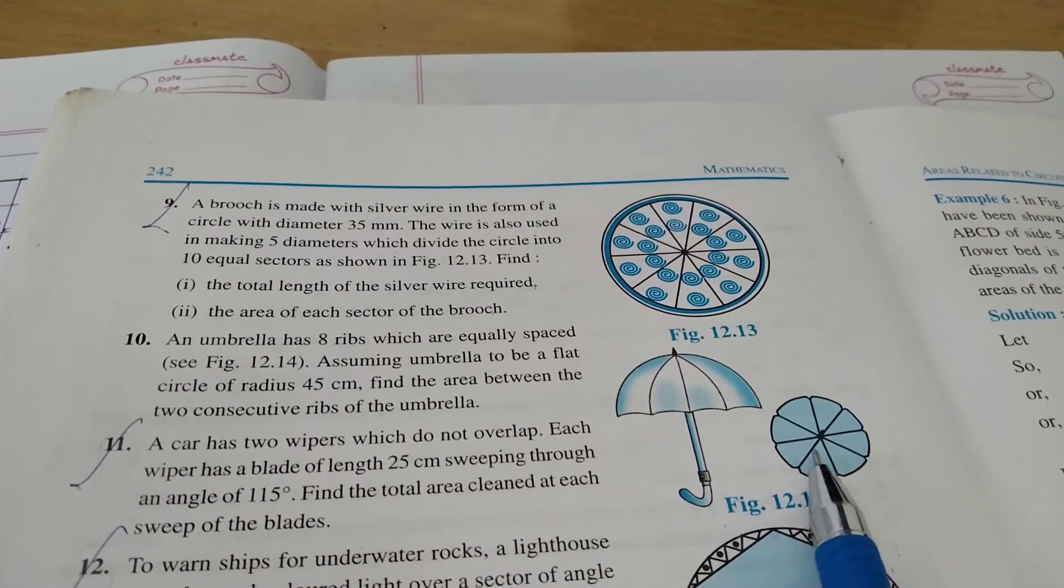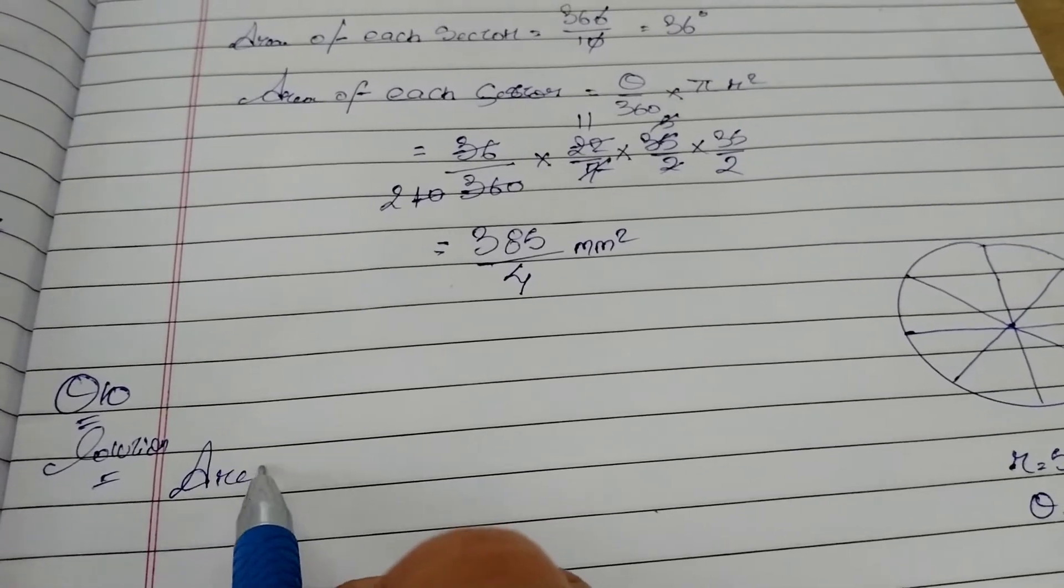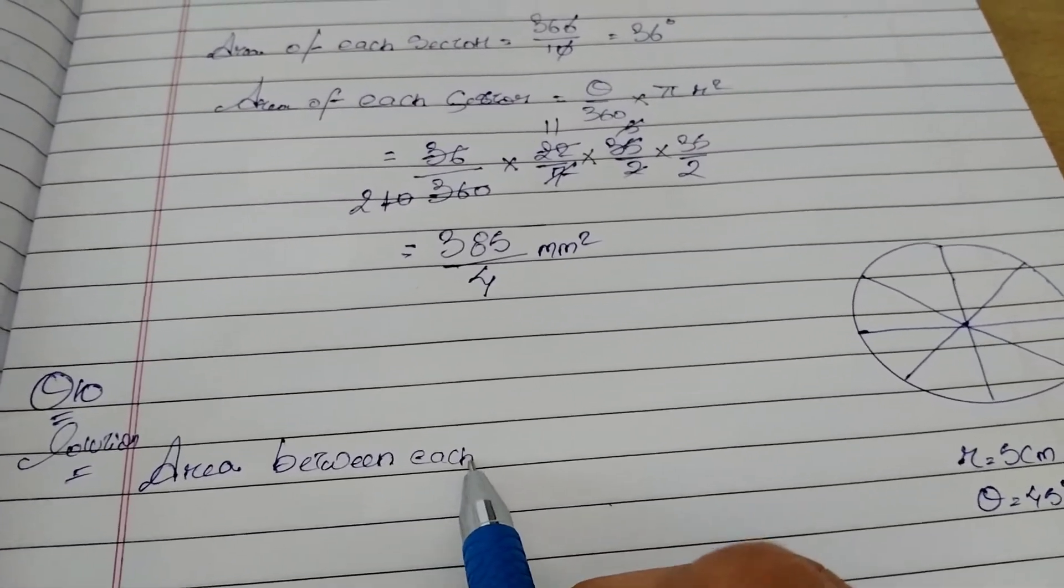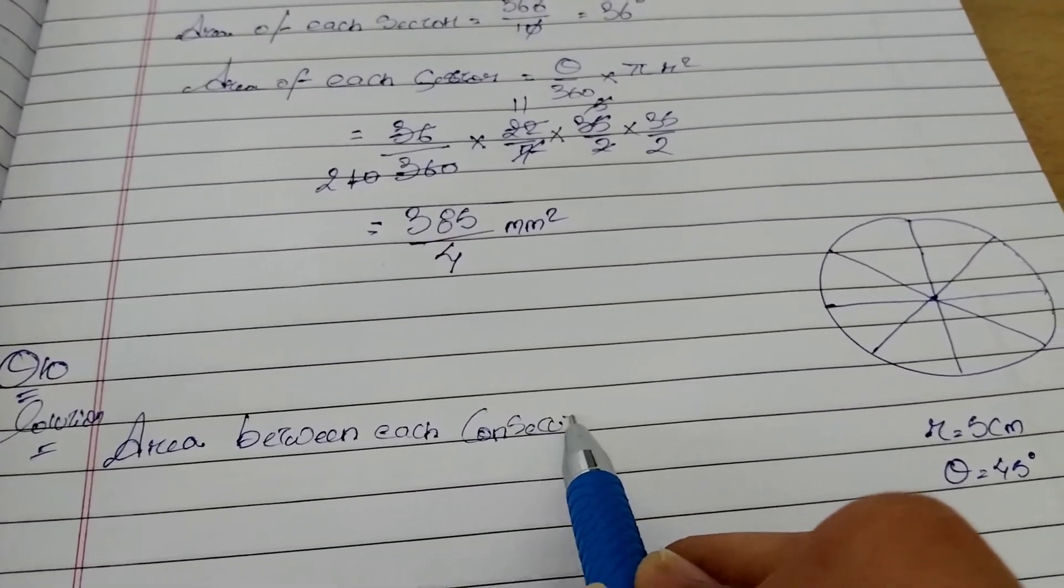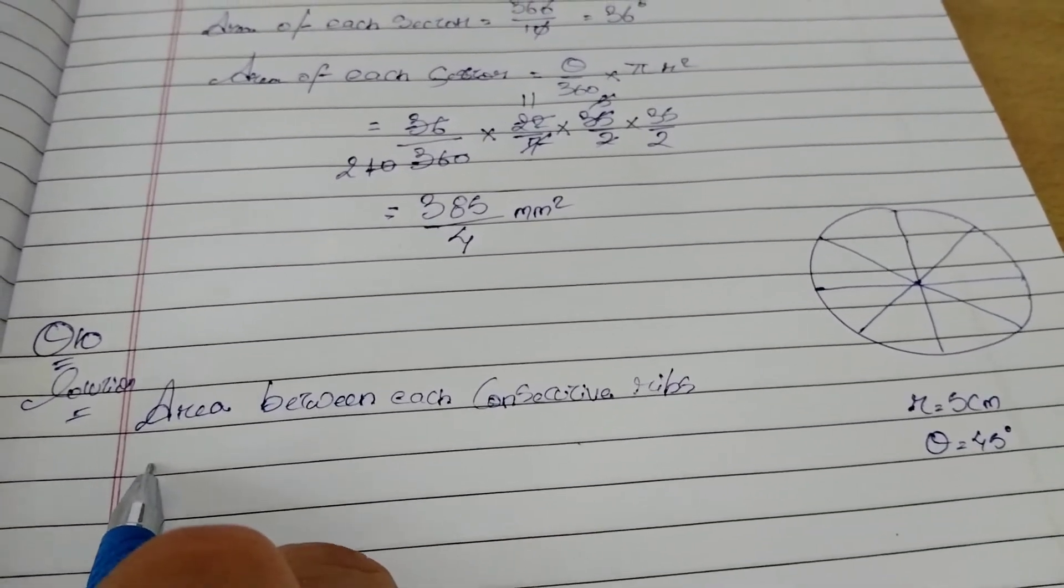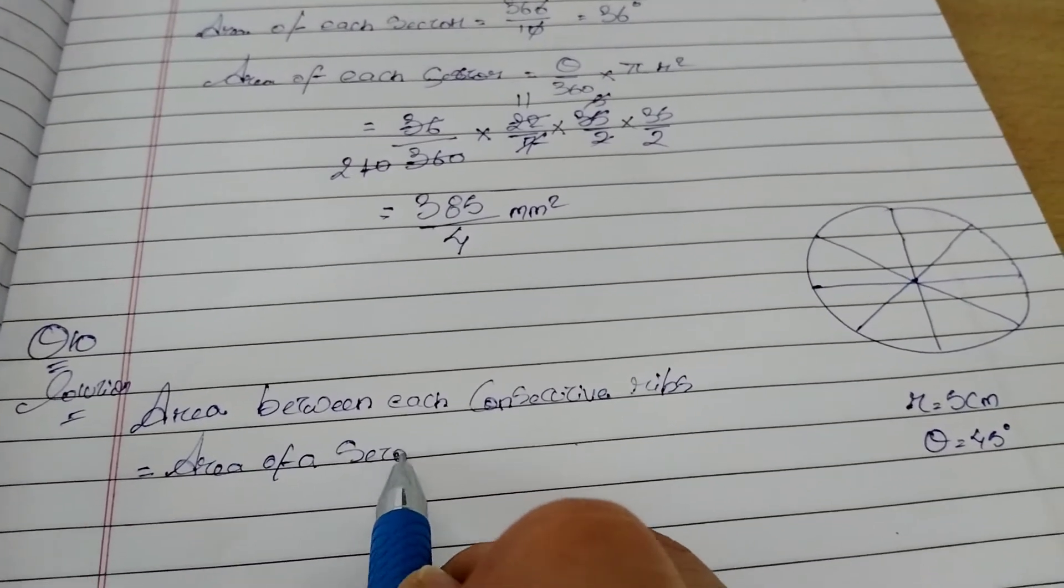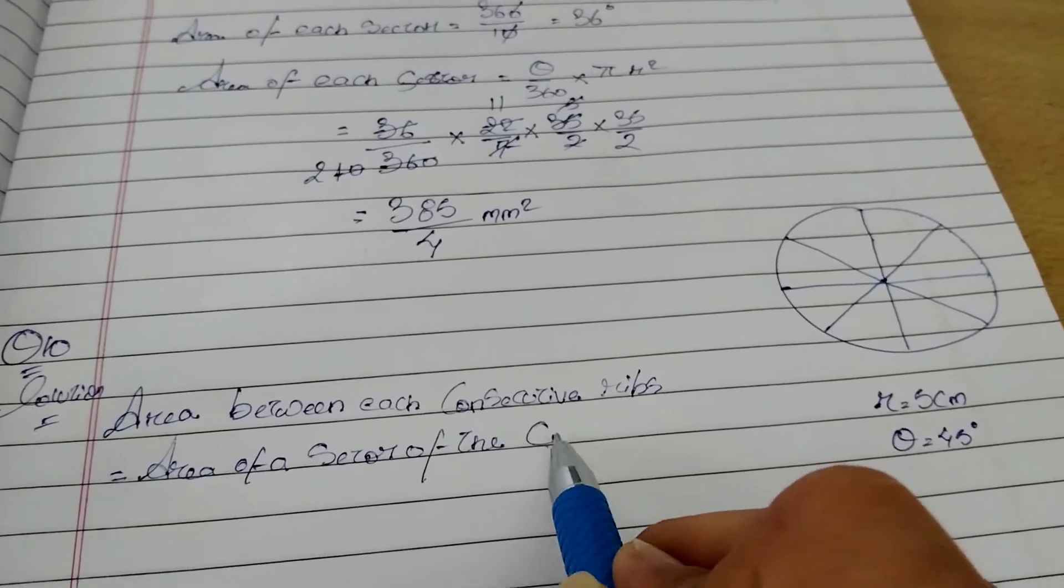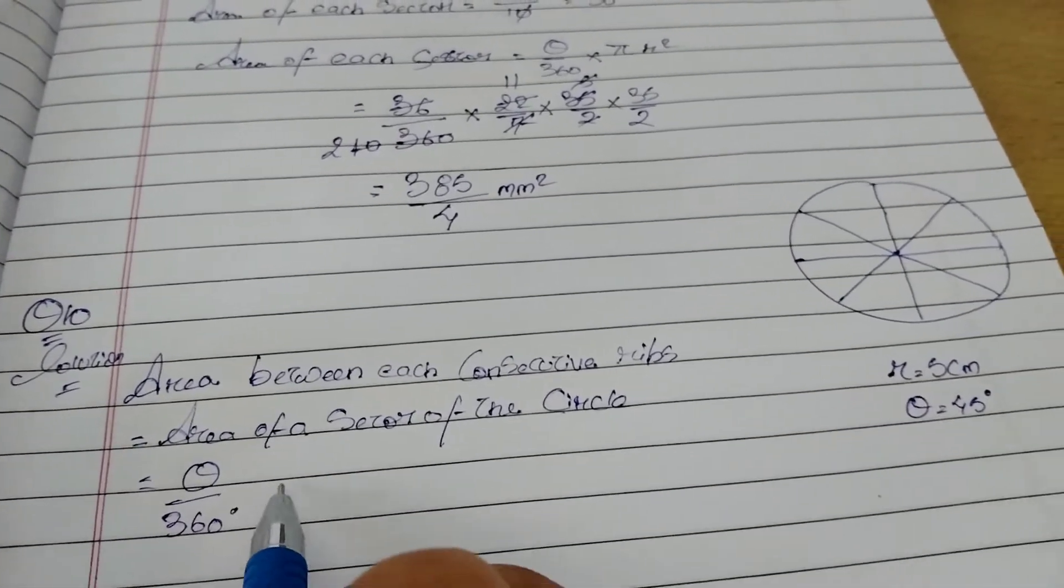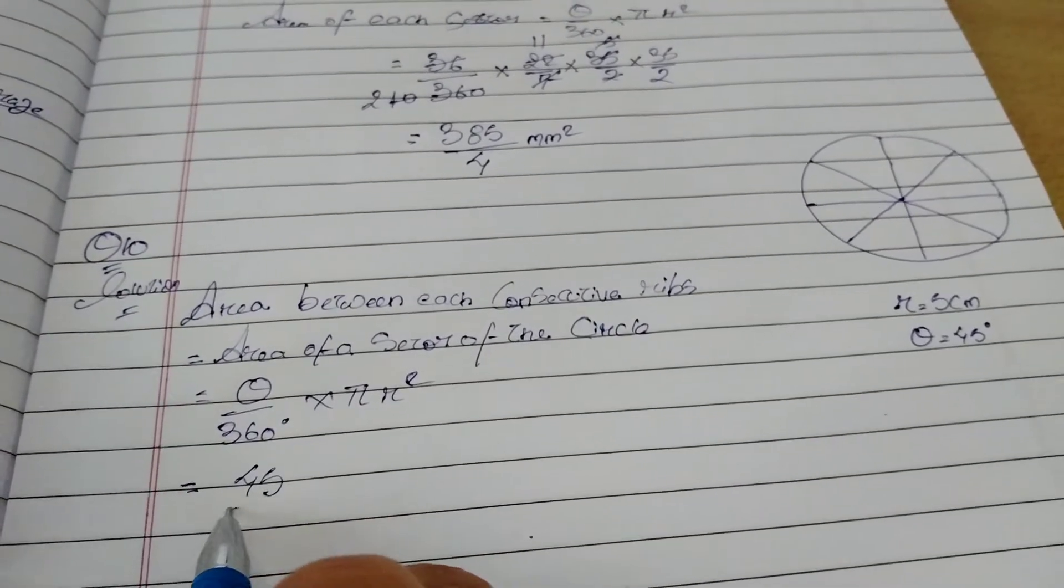Let's start. So I'm ready with this format. Let's start. Area between each consecutive ribs, okay between each consecutive ribs, equals area of sector. Area of sector of the circle is equal to theta by 360 degrees into πr². Theta we got 45 by 360.